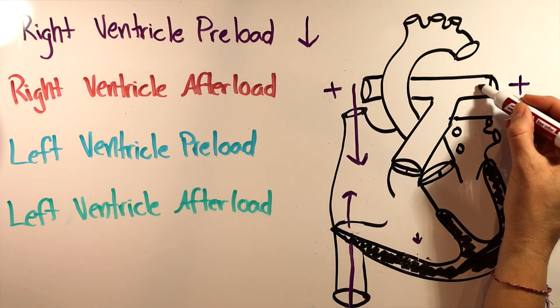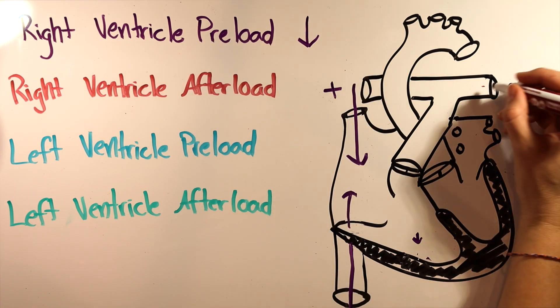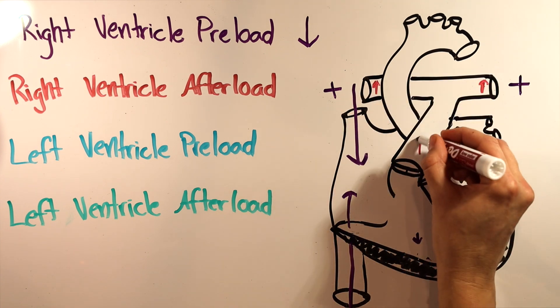How about right ventricular afterload? We've now put more pressure out into the lungs, so the pressure the RV is having to pump against goes up.